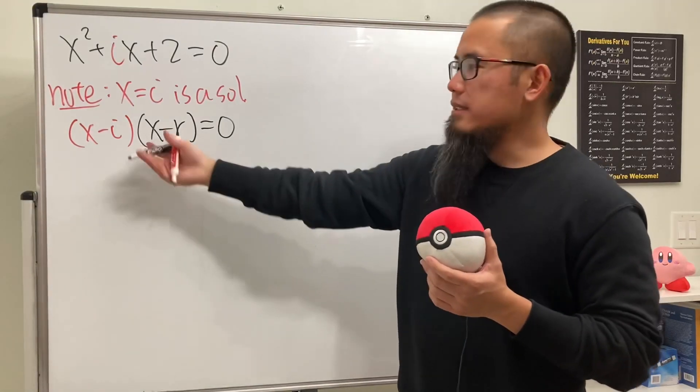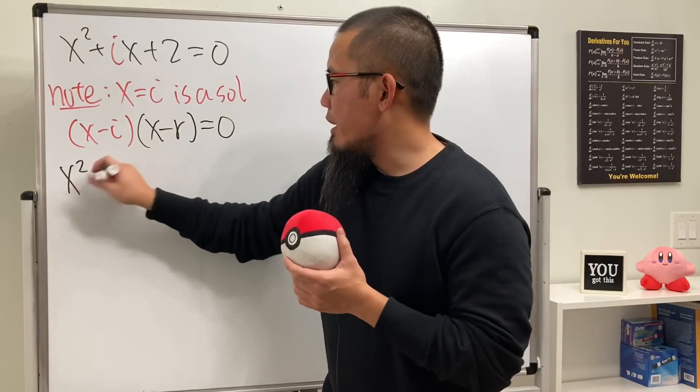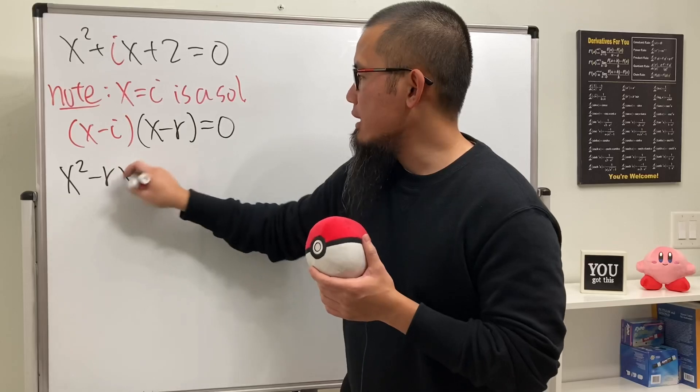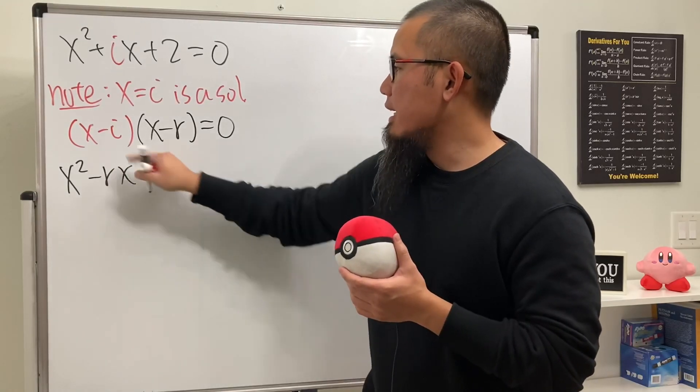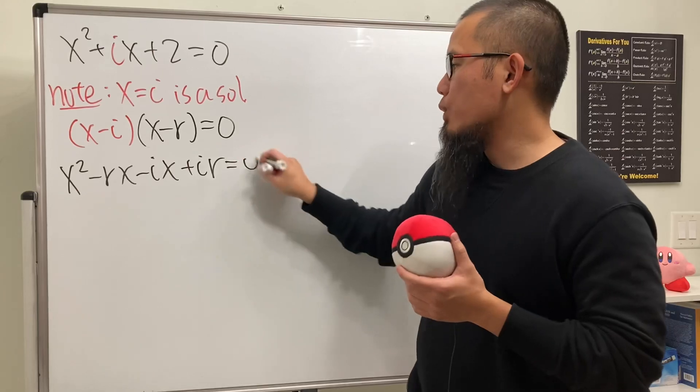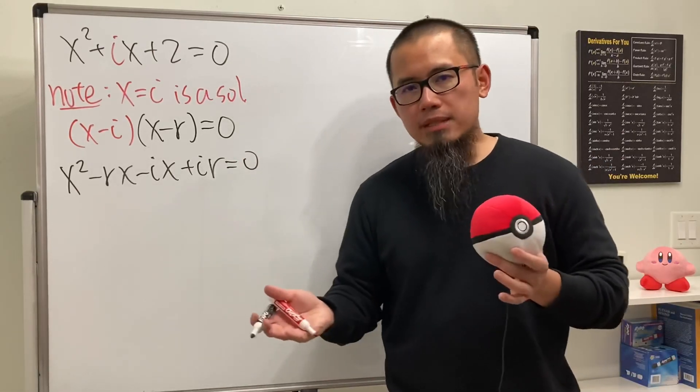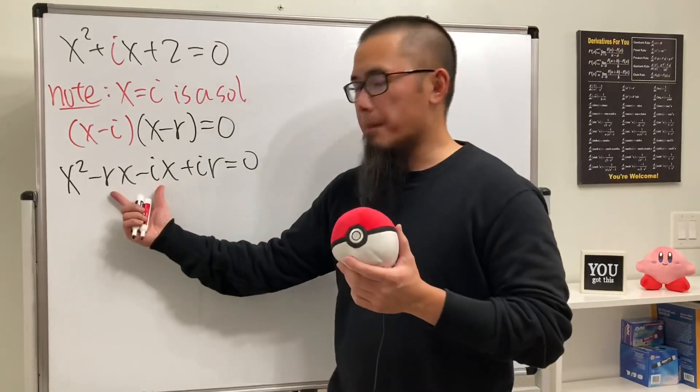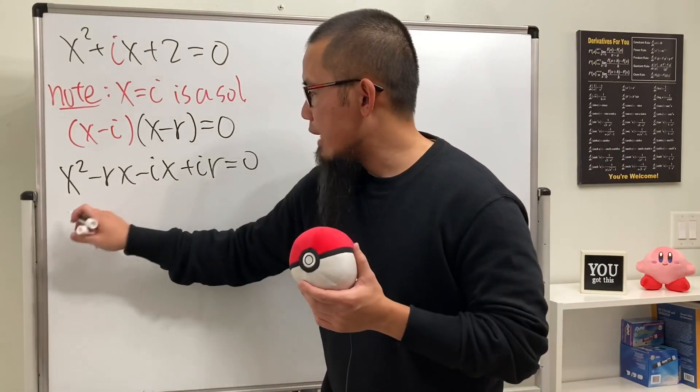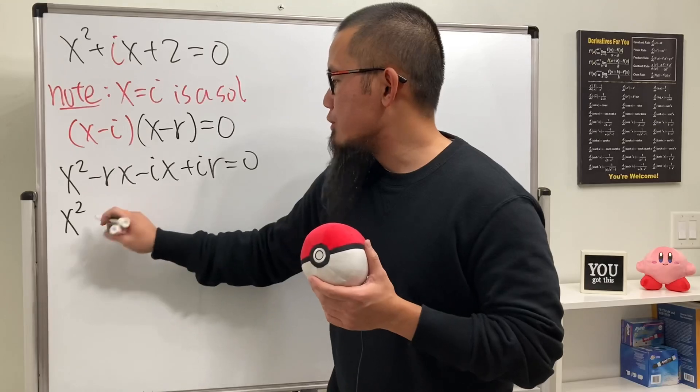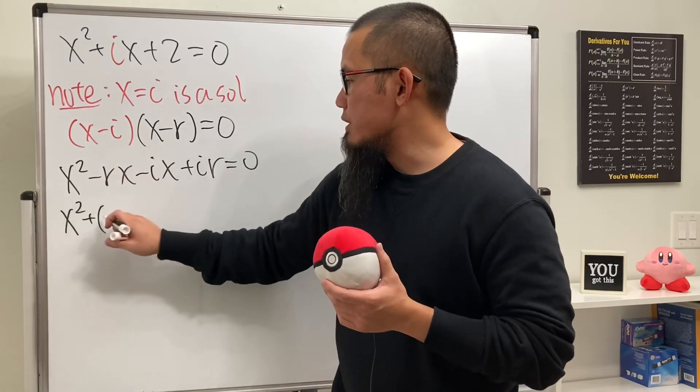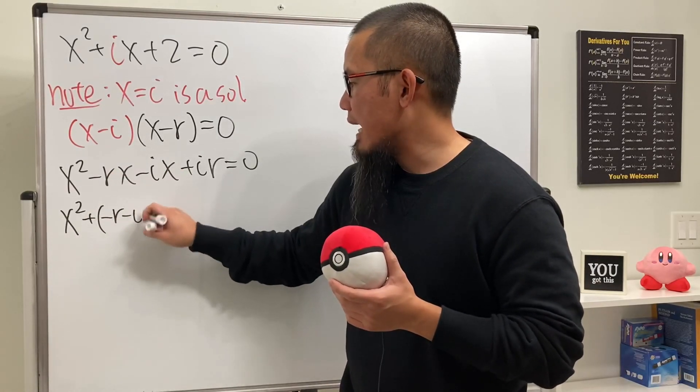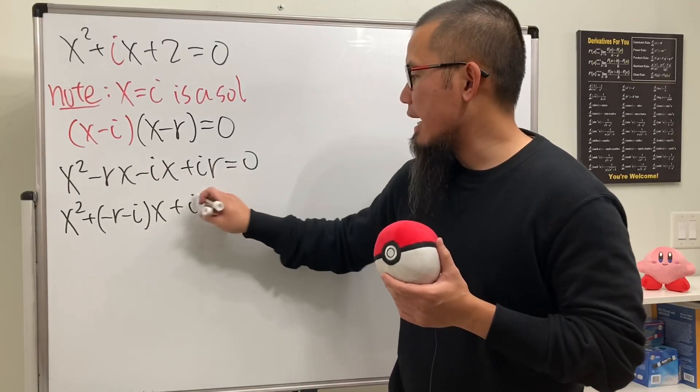We're going to multiply this out and we will get x squared, then this times is negative rx, and then this times is negative ix. Lastly we have plus ir, and this equals 0. Now it depends on your preference, which term you'd like to compare. You can combine these two terms first. If you do that, you get x squared plus parentheses with negative r minus i times x, and then plus ir.